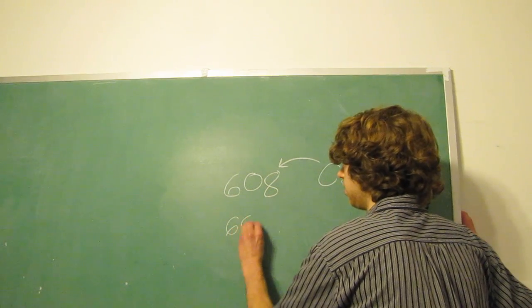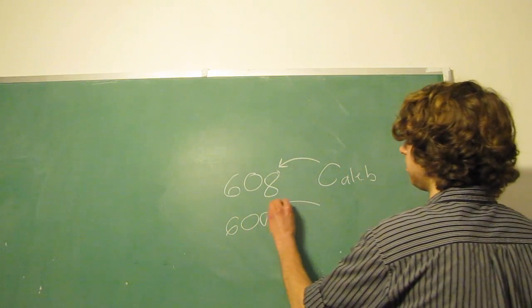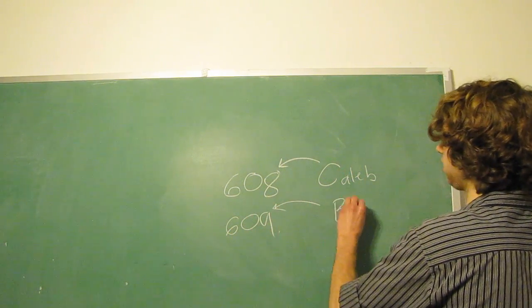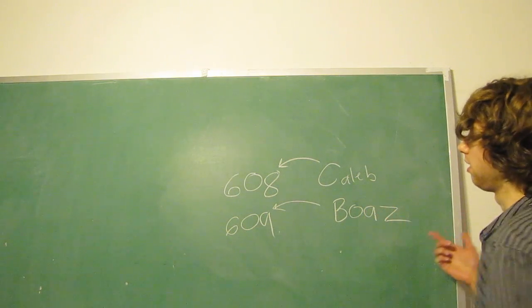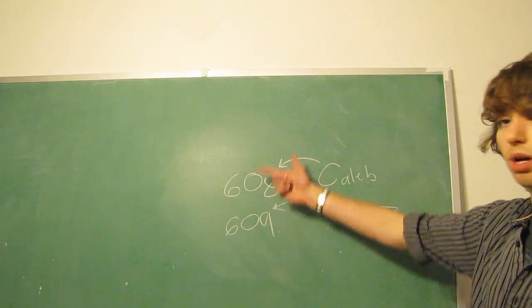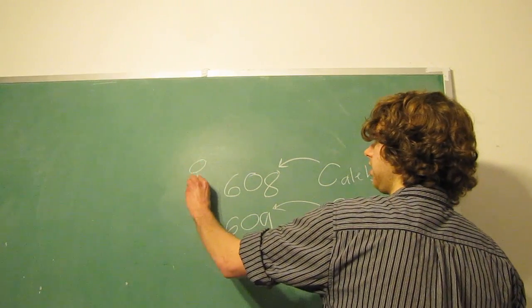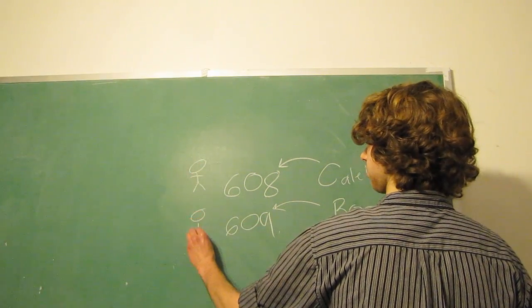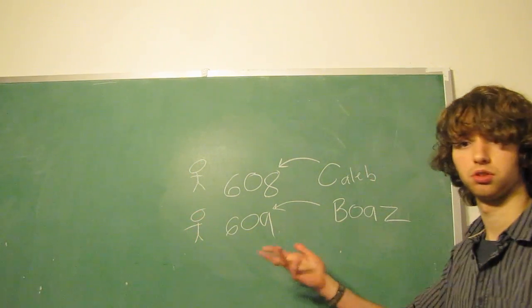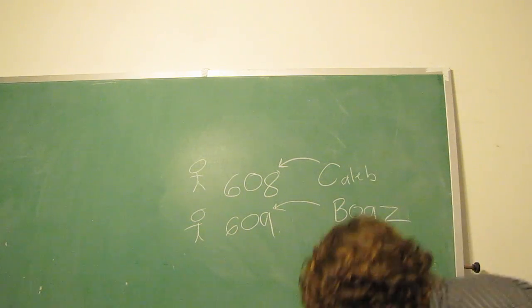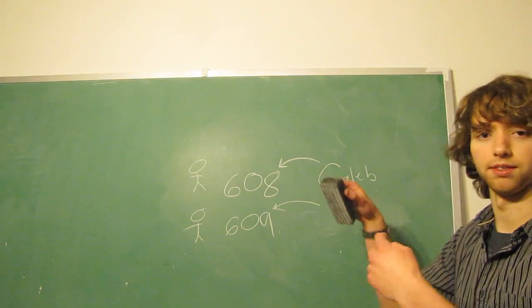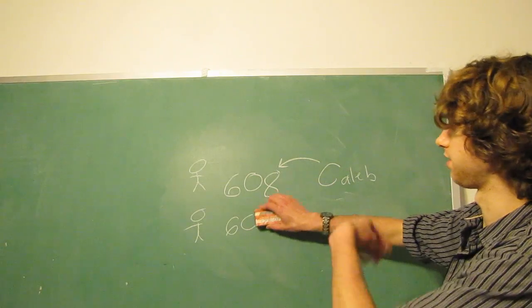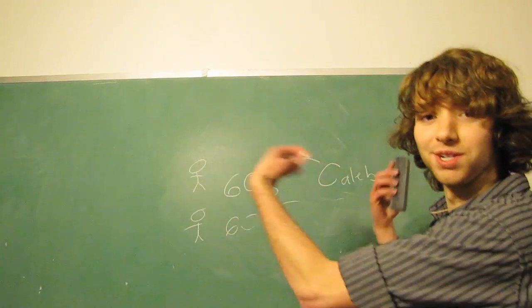So what I mean by that is if we change the primary key, we're going to also change the person, right? So let's say we have 609. Well, this is going to be a completely different person, right? Because they're two separate entities. This one's referring to some guy over here, and this one is referring to some guy over here. Two separate entities. You can also think, oh, by the way, that processor, that thing. This is called dependency.